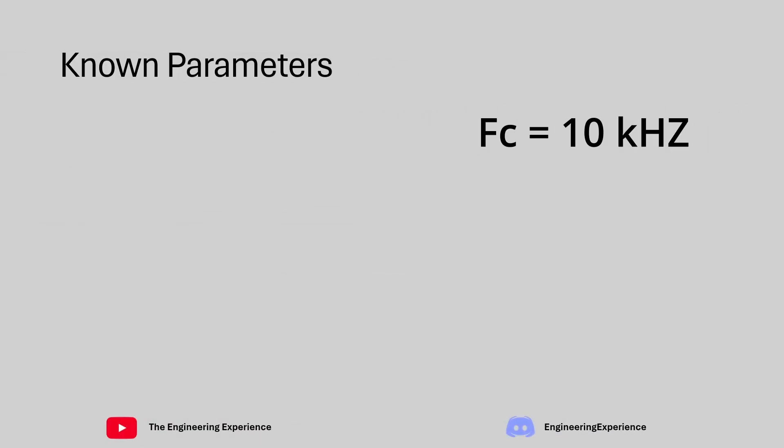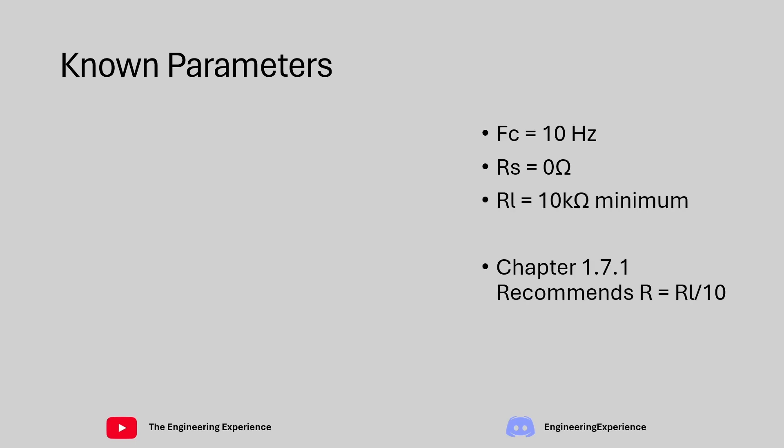The known parameters are: cutoff frequency of 10 kHz, source impedance of 0 ohms, and load impedance of 10 kOhms. The Art of Electronics book recommends that our filter resistance should be a tenth of the load resistance. So our source resistance of the RC filter should be 1 kOhm, a tenth of the 10 kOhm load, so that we are not affecting the output too much.